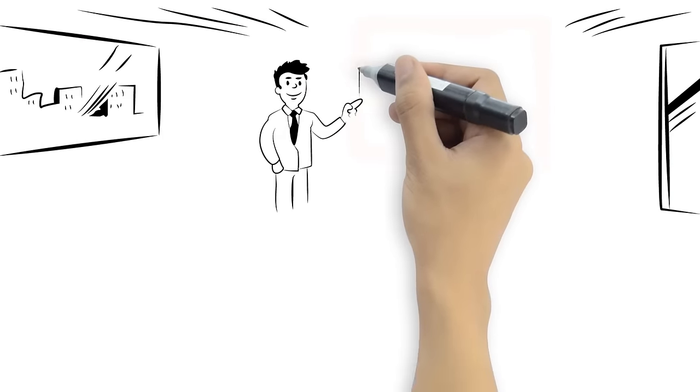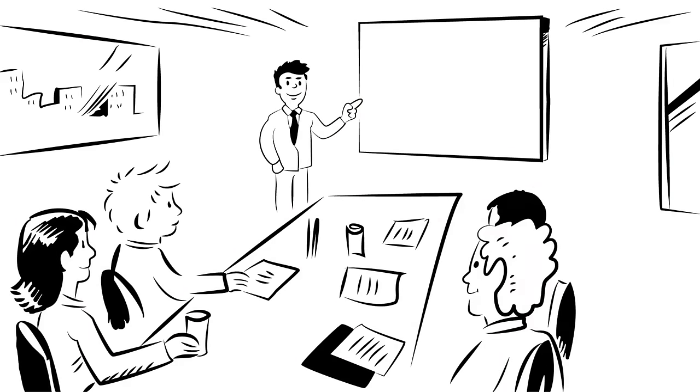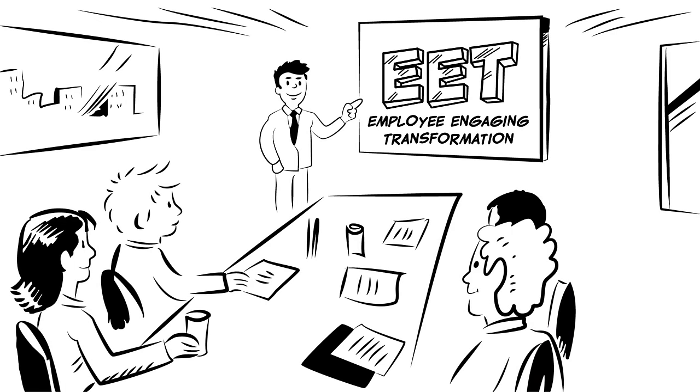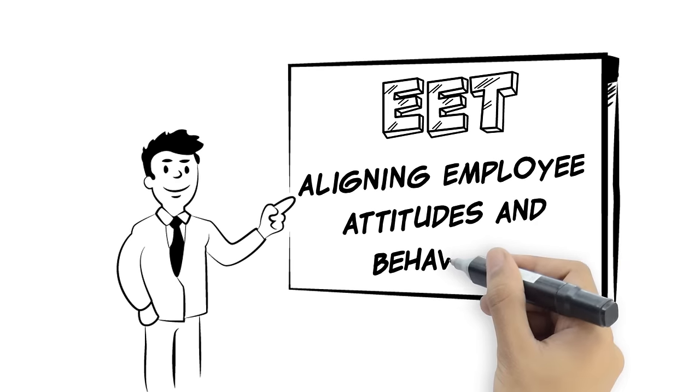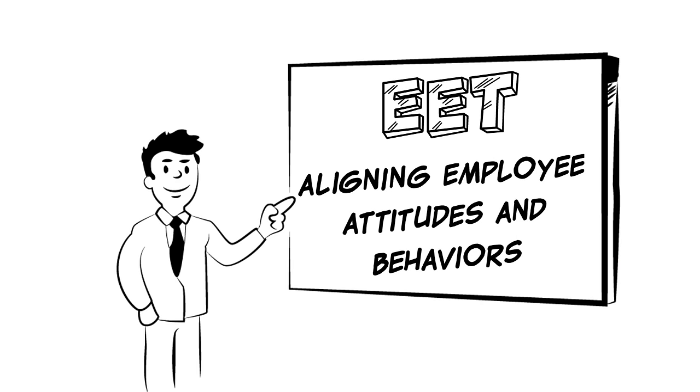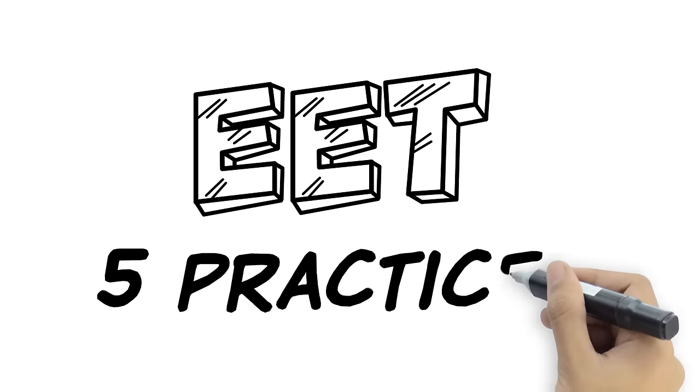Dave brought in Temkin Group to train and coach his leadership team on employee engaging transformation, which they call EET. It's an approach for aligning employee attitudes and behaviors with the organization's desire to change. EET is based on mastering five principles.